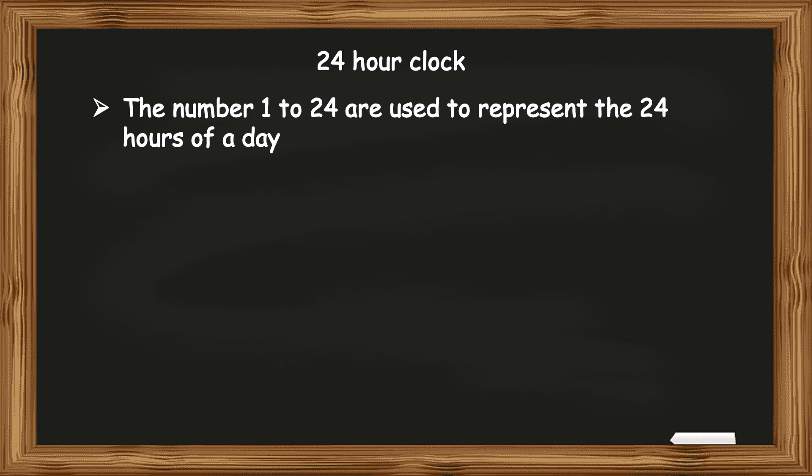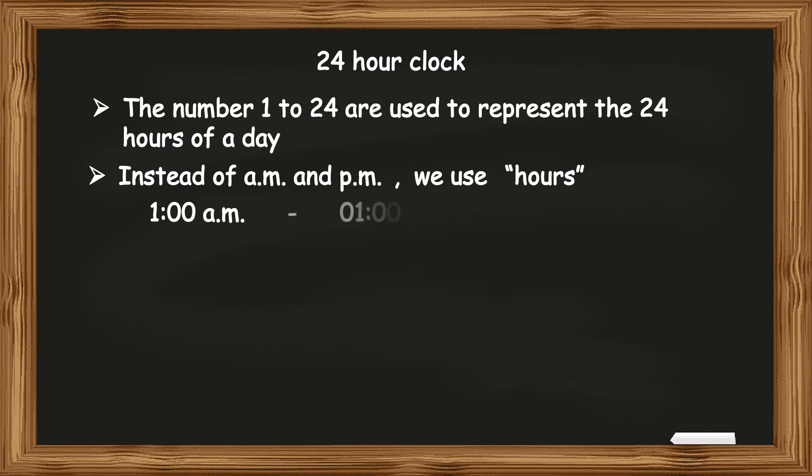Hence, instead of am and pm, in a 24-hour clock, we use the term hours. For example, 1am will be written as 0100 hours. 2am will be written as 0200 hours. And 3am will be written as 0300 hours.